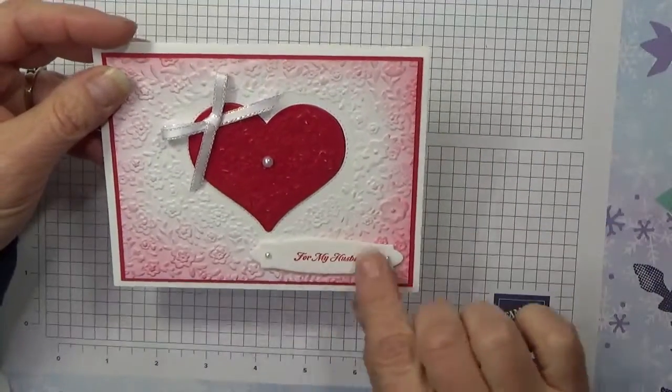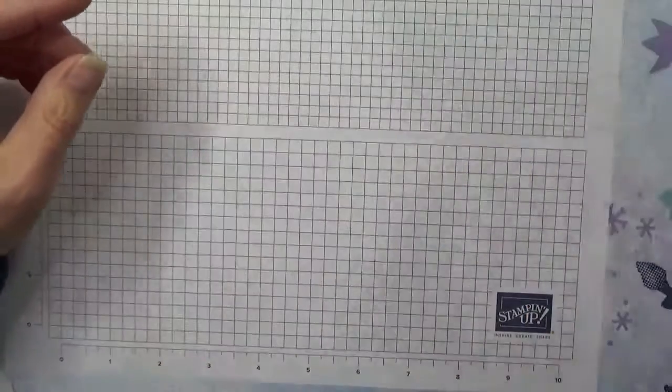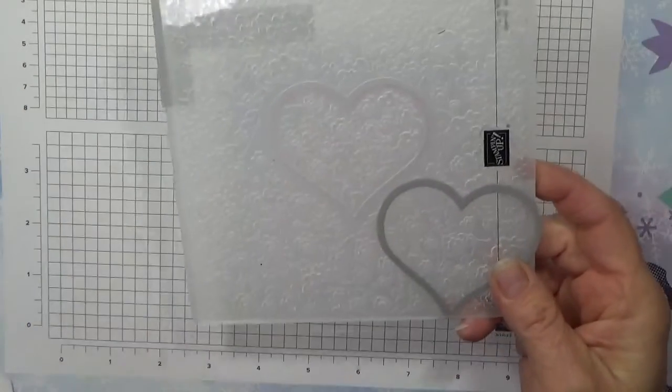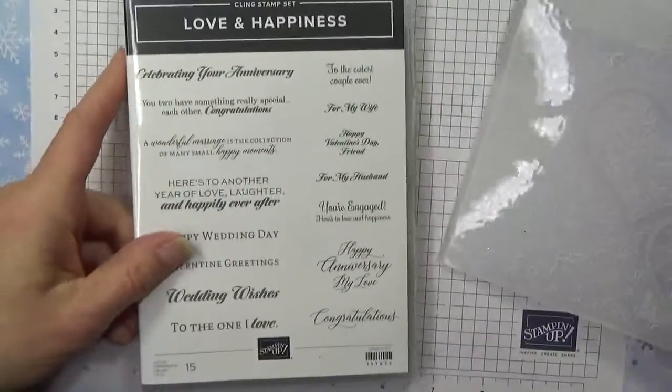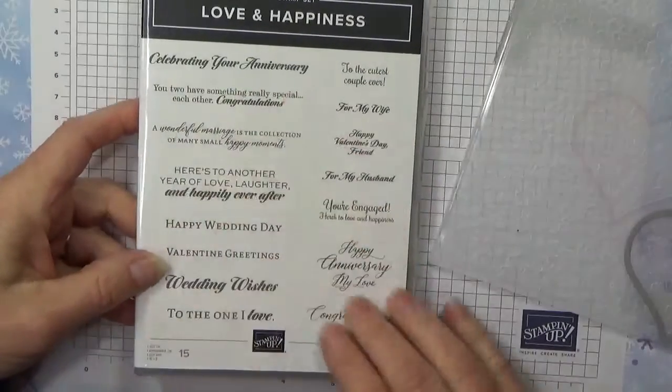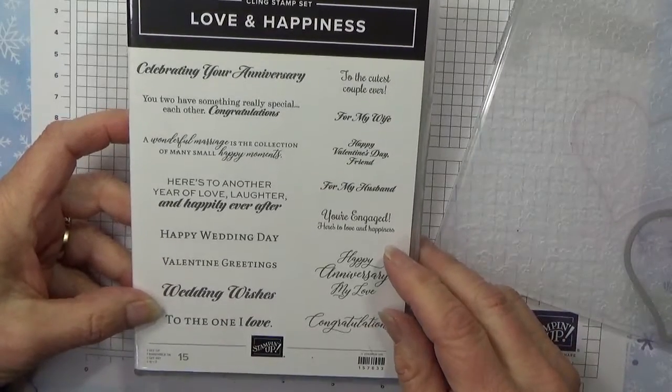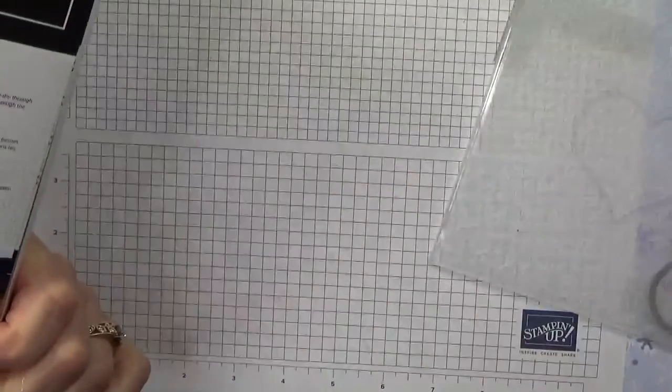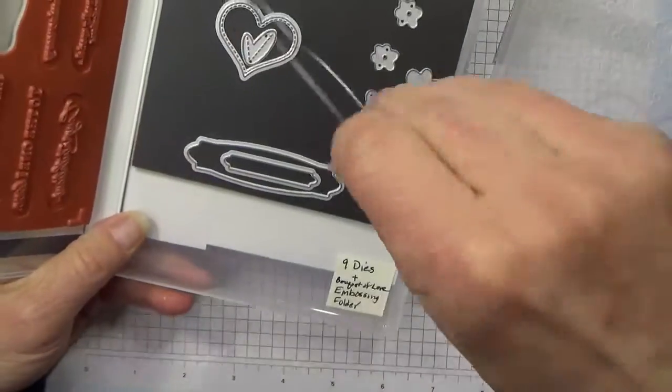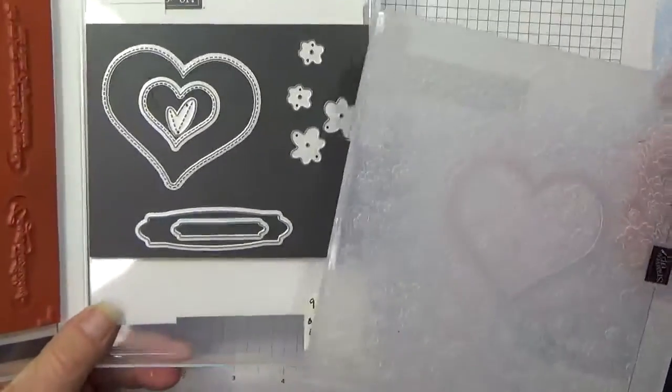So we're gonna use the Love and Happiness bundle. It's got all these wonderful sentiments in just beautiful fonts, and you can bundle it with the Bouquet of Love dies and hybrid embossing folder.